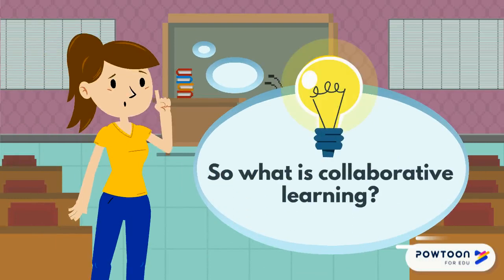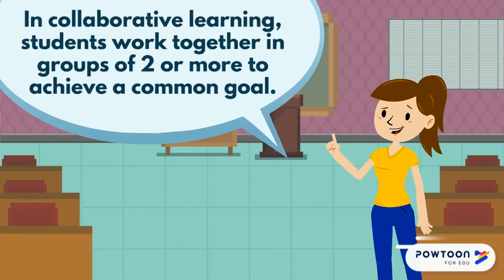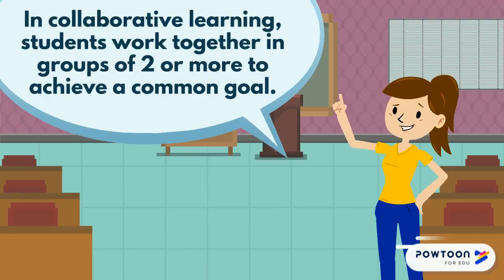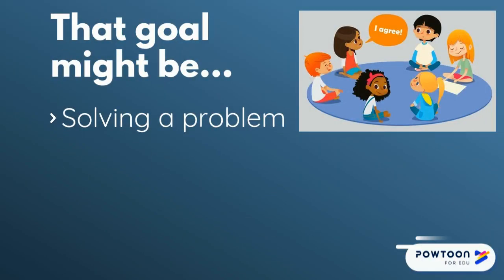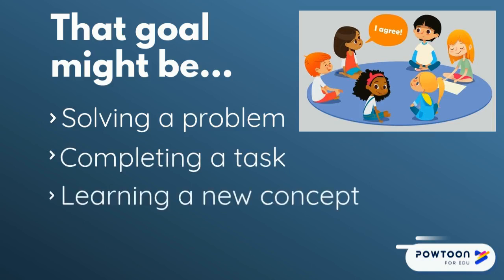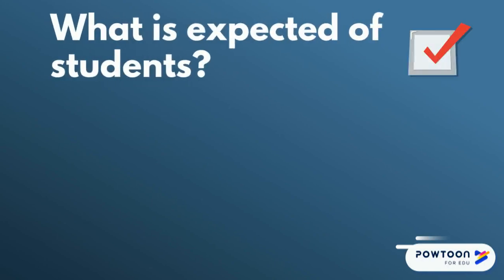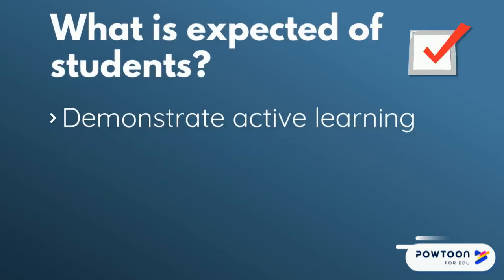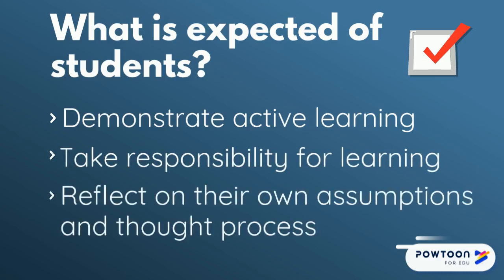So what is collaborative learning? In collaborative learning, students work together in groups of two or more to achieve a common goal. That goal might be solving a problem, completing a task, learning a new concept, or even creating a product. During this time, students are expected to be demonstrating active learning and take responsibility for their own learning. They should also be reflecting throughout the entire collaborative learning experience on things such as their own assumptions and their thought process.